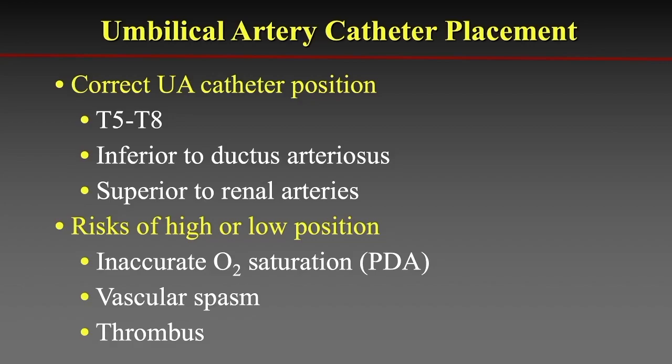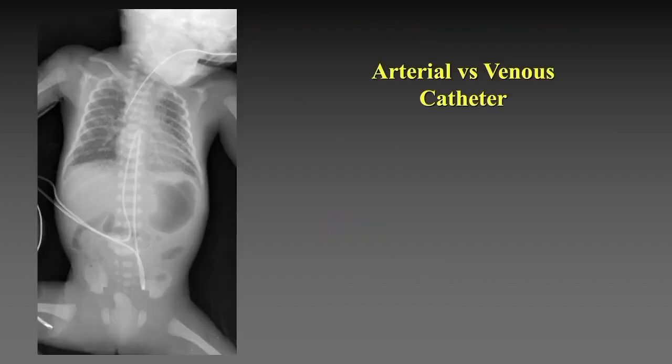Umbilical artery or UA catheters should be placed so that their tip is between the fifth and eighth thoracic vertebra, inferior to the ductus arteriosus and above the renal arteries. Malpositioned UA catheters are at risk for inaccurate O2 saturation readings when close to the ductus, and have been associated with vascular spasm and thrombosis when low in position in an intra-abdominal location. One can usually distinguish an arterial from a venous umbilical catheter by their course on a frontal x-ray: the umbilical artery catheter courses inferiorly to join the iliac arteries before curving toward the chest, while the umbilical venous catheter does not.